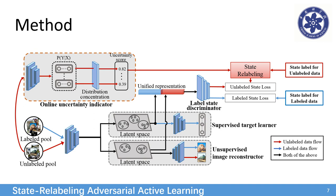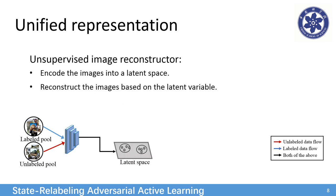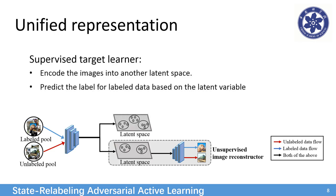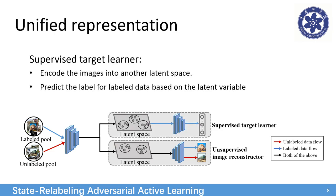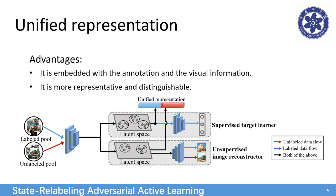This is the architecture of our model. The model encodes images into two latent spaces: one for reconstructing the images, and the other for predicting the labels, to integrate both visual and annotation information. By this, we obtain the unified representation embedded with annotation, and the visual information is more representative and distinguishable.